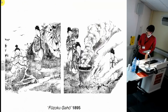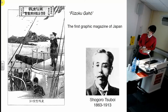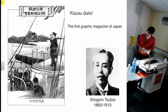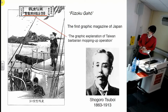This image is from Fuzoku Gaho in 1895. This journal, Fuzoku Gaho, was the first graphic magazine of Japan. This cover image represents the social political landscape in the late 19th century. The title of this issue means the graphic explanation of the Taiwan barbarian moping up operation.